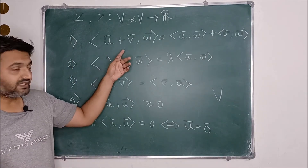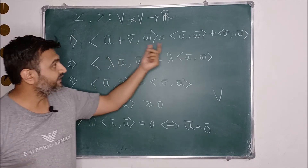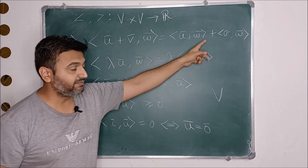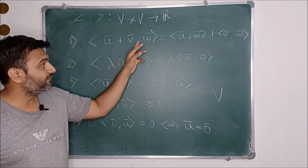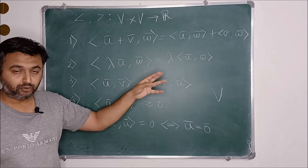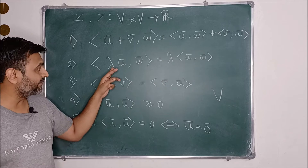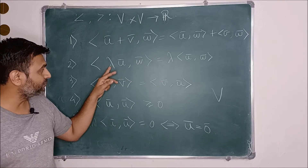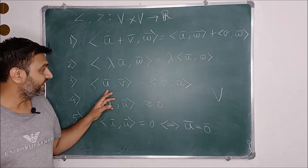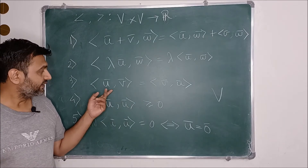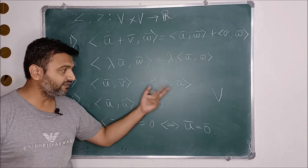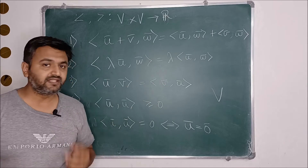So what conditions must the function satisfy to be called an inner product? The first is called linearity — it should be linear in the first variable, so addition gets split, where u, v, w are vectors in V. Second is the scalar multiple property: lambda is a real number, and you should be able to take it outside the function. Next is called the symmetric property — the inner product of u, v or v, u should give the same answer.